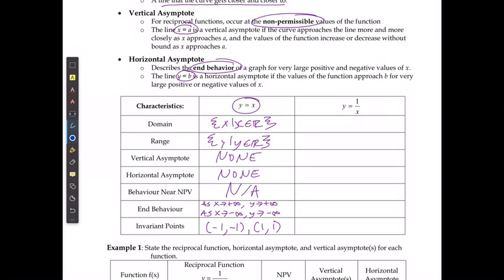For the reciprocal function, the domain is x where x cannot equal zero, and x is a real number. The range is y where y also cannot equal zero, and y is a real number. The vertical asymptote occurs at x equals zero, and the horizontal asymptote occurs at y equals zero.